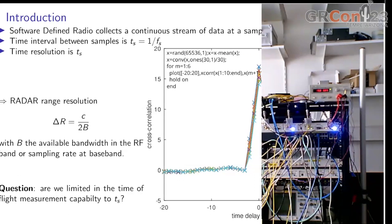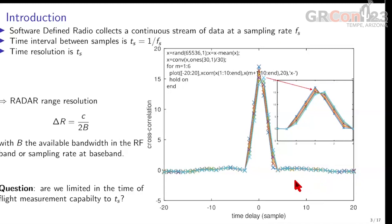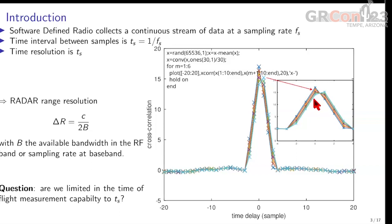Of course, if we're asking the question, chances are that we can answer positively. What you're seeing here is a numerical simulation where we generate a pseudorandom sequence, remove the mean value, and spread the information with adjacent samples by using a convolution, so that the pseudorandom sequence — whose correlation should be a Dirac function — is spreading information over 30 adjacent samples. We do a correlation between the reference signal and the time-offset signal with index m equal 1 to 6. You might always have a correlation peak at the same location because of the spreading, but from the shape of the correlation peak, if we zoom into it, we see that the shape changes and allows us to have much better accuracy on the time delay than just one sampling period.